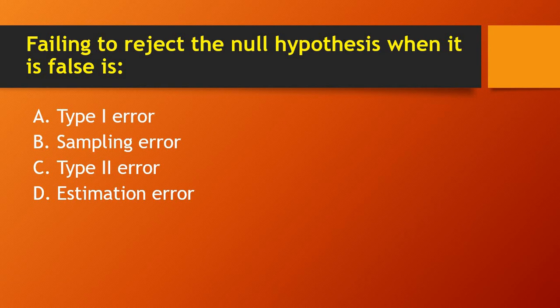Next question: failing to reject the null hypothesis when it is false is — Type 1 error, sampling error, Type 2 error, or estimation? The answer is Type 2 error.